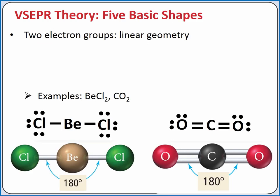The simplest shape we can have results from just two electron groups. The farthest we can put two electron groups away from each other is 180 degrees apart, or at the opposite sides of a line through the central atom. This geometry is called linear. Both BeCl2 and CO2 have a linear molecular geometry.